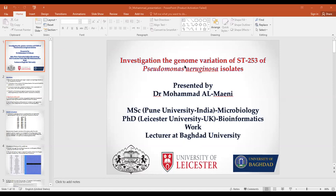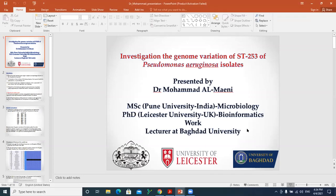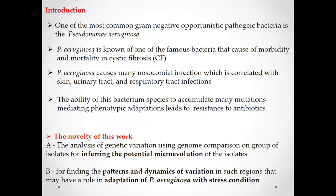My topic is the investigation of the genomic variation of ST 253 of Pseudomonas aeruginosa isolates. Introduction: Pseudomonas aeruginosa is an opportunistic pathogenic bacteria, meaning it causes disease when the host resistance is low. It is a famous bacteria known to cause morbidity and mortality in cystic fibrosis — morbidity means it causes disease, while mortality refers to death cases related to this disease.